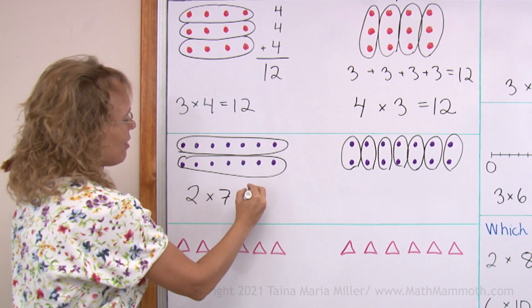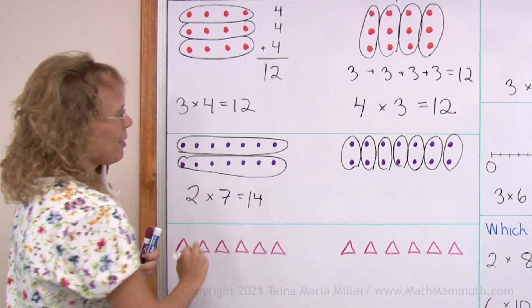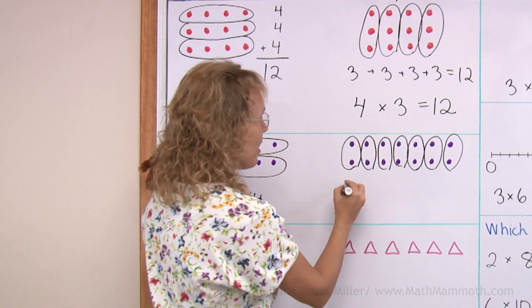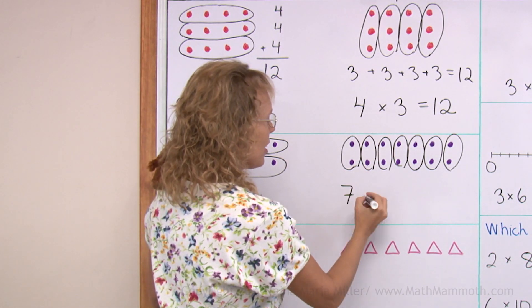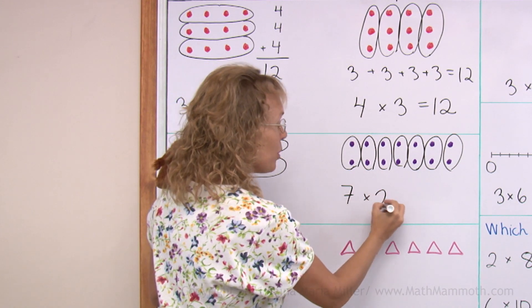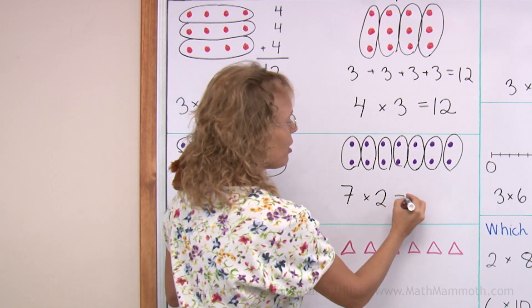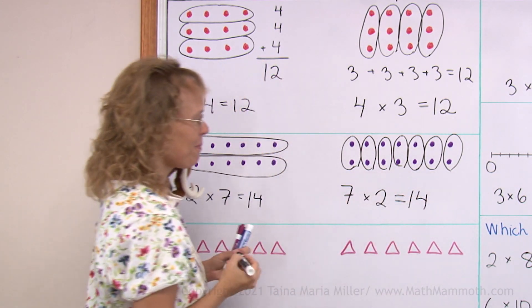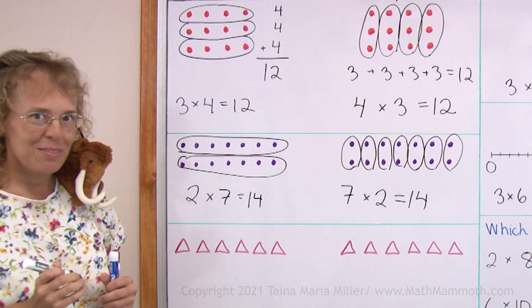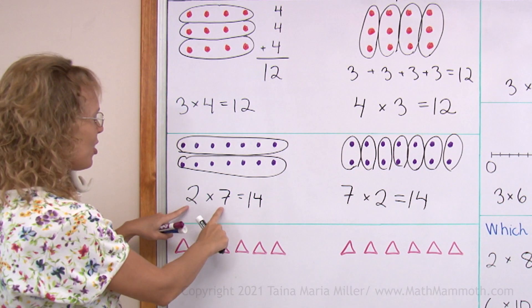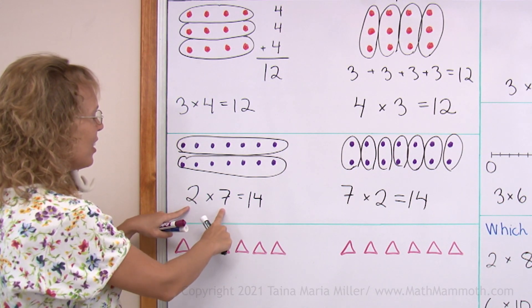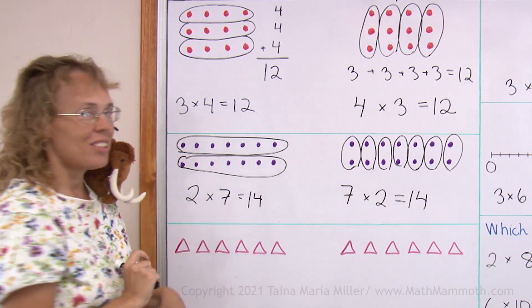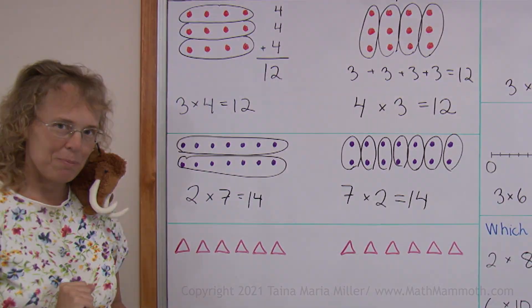So seven and seven makes fourteen. Over here we have seven groups and two in each group, but the total is still fourteen. It does not matter whether it's two times seven or seven times two — the answer is the same.